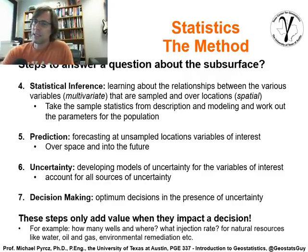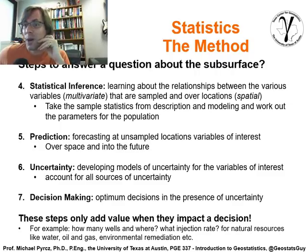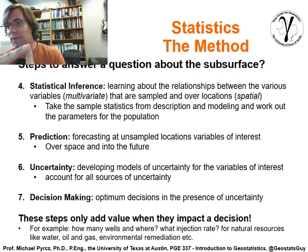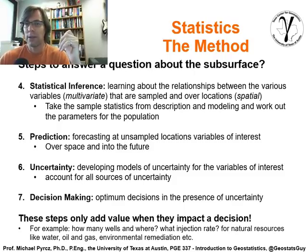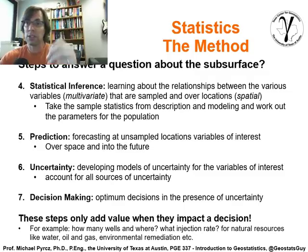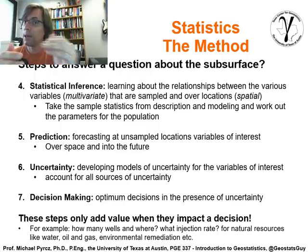The next step is statistical inference — the opportunity to become exploratory, to basically look at the data and try to learn something from it. If it's multivariate with a bunch of different variables, or if it's spatial with things located at different locations across space, you can take the sample statistics from description and modeling and try to work out what's going on. The most complicated part of inference is to understand what's going on with the population. The previous step used engineering and geoscience more; this step uses more of the statistics.